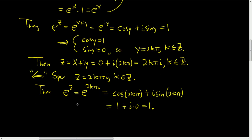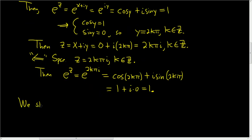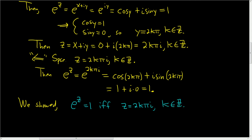Let me write down again what we've shown. We showed that e to the z equals 1 if and only if z equals 2k pi i, where k is in the set of integers. So now let's rewrite our original claim. The claim was that e to the z1 is equal to e to the z2 if and only if z1 is equal to z2 plus 2k pi i, where k is an integer.